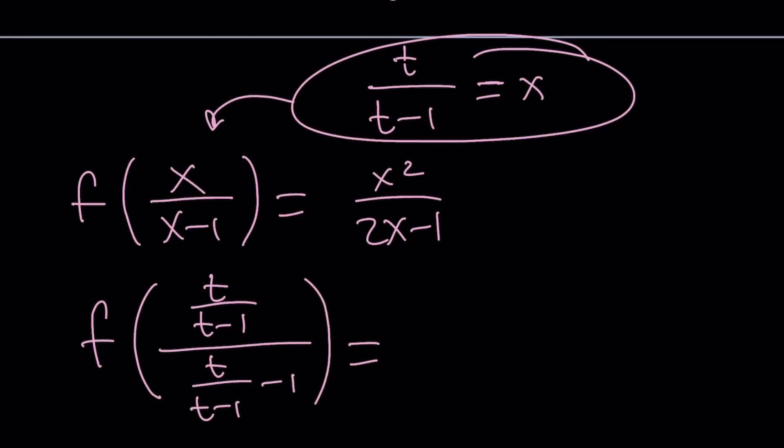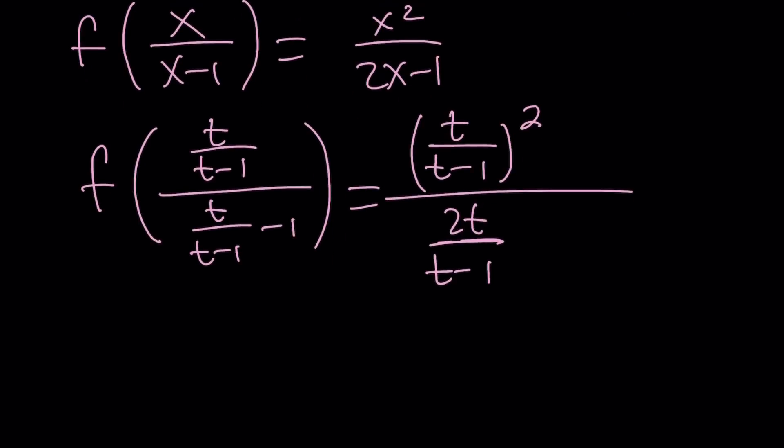And, on the right-hand side, you're going to get t over t minus 1 squared divided by 2 times t over t minus 1, which is 2t, or not 2t, over t minus 1 minus 1. This is what it turns into after substitution of x.